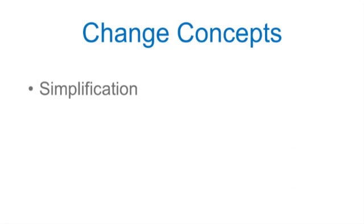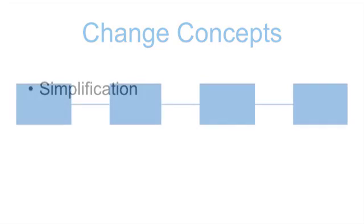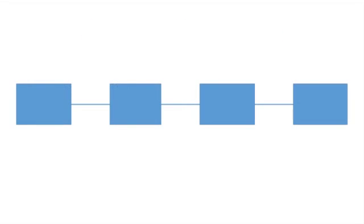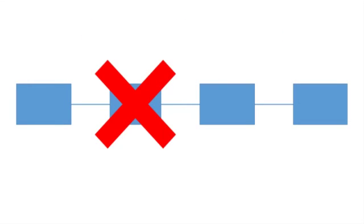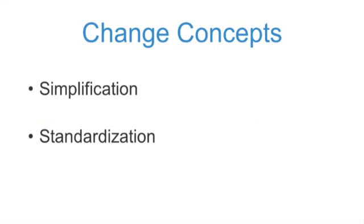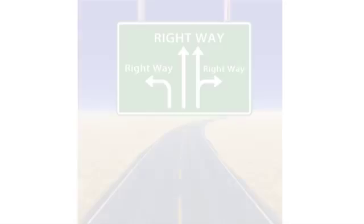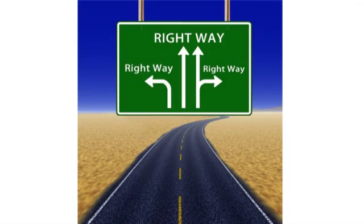Change concepts that you should apply include simplification — that is, are there steps in the system that can be eliminated because they don't bring value, or can be done in some other way? The other is standardization: what is the best way known to achieve the outcomes that we want to achieve?